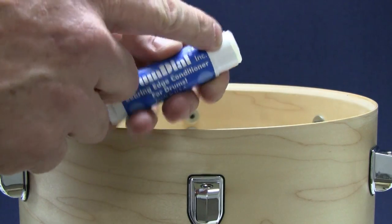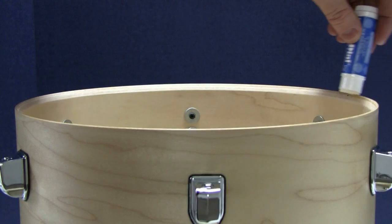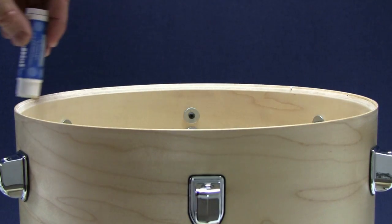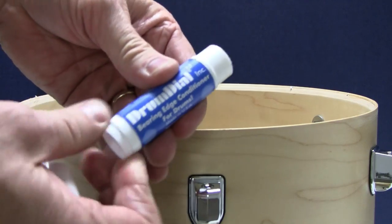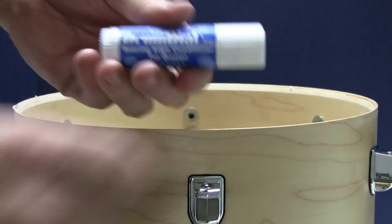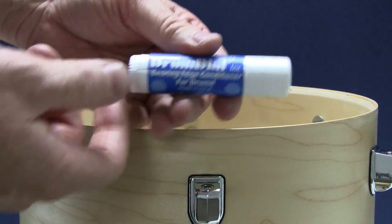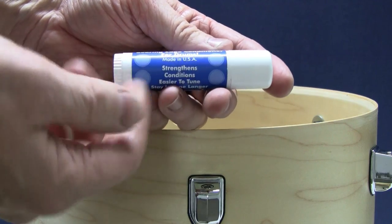It strengthens and conditions the top of the bearing edge where it contacts the drum head. This makes it easier to tune your drums because the drum head glides over the bearing edge very easily and very smoothly, making your drum stay in tune longer without deadening the sound of your drum.